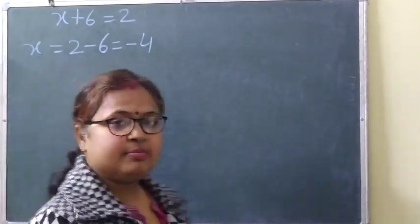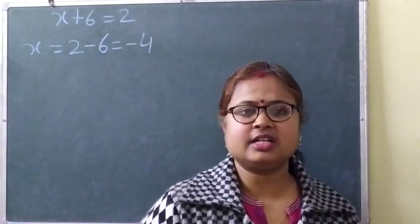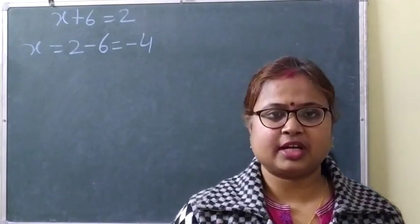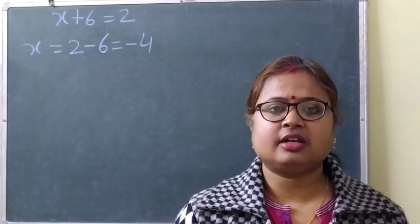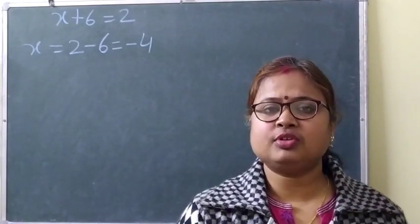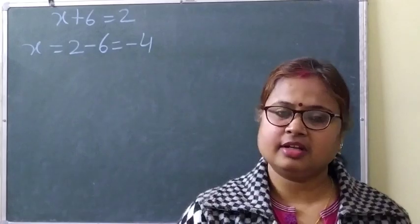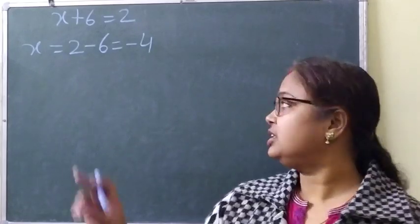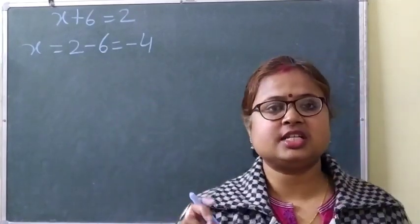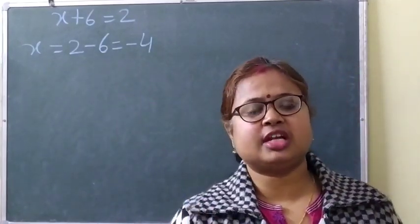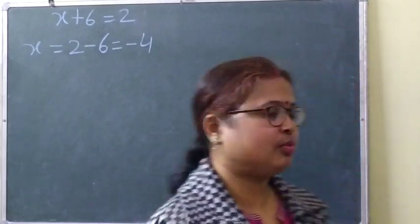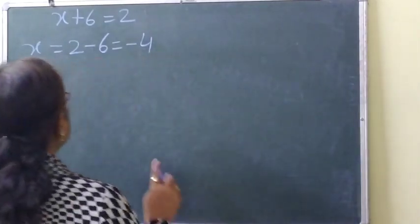Because when plus and minus sign are both present, we do subtraction. And in the answer, we put the sign with the greater number. Here the greater number is 6, and 6 is with the minus sign. So the answer is minus 4.